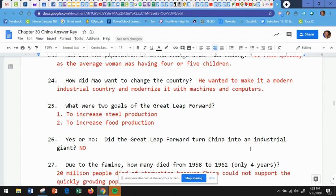Question 25, what were two goals of the Great Leap Forward? Well, number one, to increase steel production and number two, to increase food production. At the beginning, we talked about them having a great famine after a drought because they didn't have enough food to eat. So one of the goals is to make sure that they could produce enough food to feed their entire population. Number 26, yes or no? Did the Great Leap Forward turn China into an industrial giant? No, it did not.